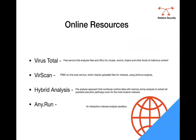Some helpful online resources are VirusTotal, VirusScan, Hybrid Analysis, and Any.run. VirusTotal is a free service that analyzes files and URLs for viruses and worms. VirusScan is also a free online scanner for uploaded files. Hybrid Analysis falls under dynamic analysis as it performs memory dump analysis to extract all possible execution pathways. Any.run is an interactive malware sandbox — both generate reports to help you understand the different pathways a malware can take.